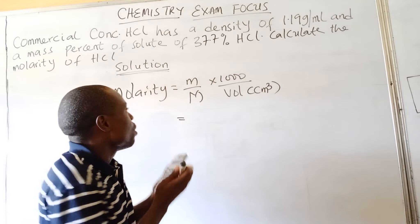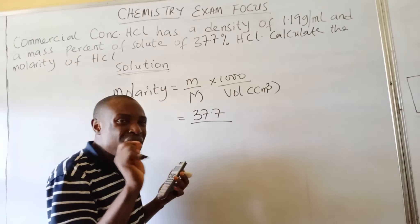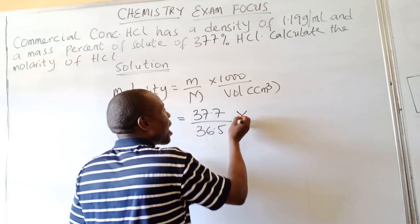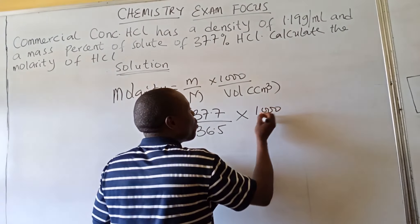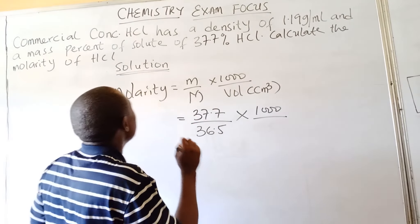which is 36.5, times 1000 over the volume of the solution. Now to get the volume of the solution, we understand that the density of the solution